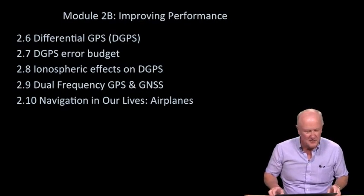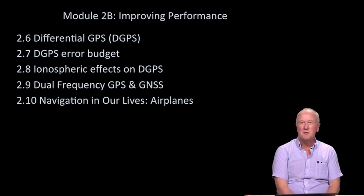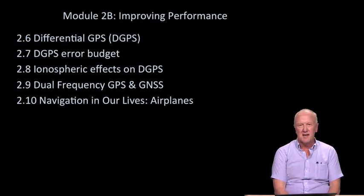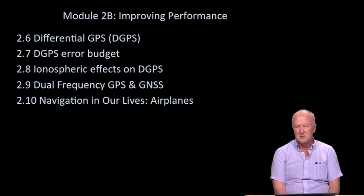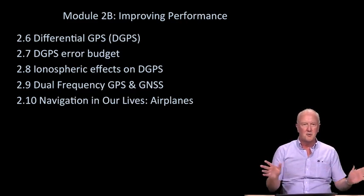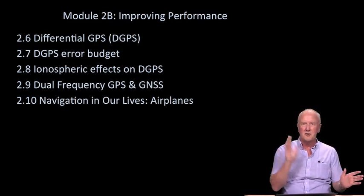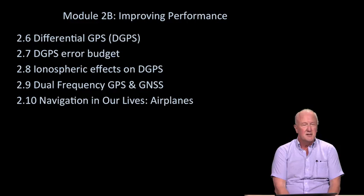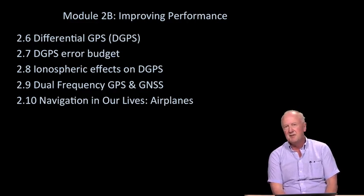Hello and welcome back. Recall last time we not only described how GPS works mathematically, we went ahead and presented some error budgets. Those showed that under normal conditions, nominal conditions, a standalone GPS receiver operating by itself with no aiding other than the normal signals from GPS could provide an accuracy of 5 to 10 meters.